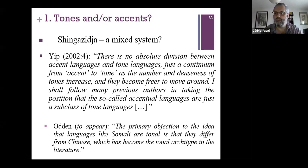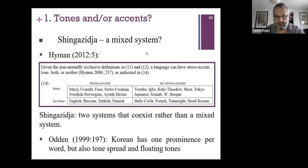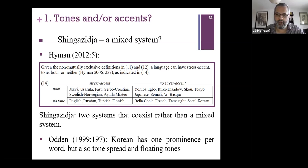Tone can also strengthen the rhotic consonant — another feature not typical of tonal languages. When the high tone is on the penultimate, the rhotic emerges as a vibrant. When the high tone is on the final vowel, the consonant is weaker — realized as a flap or even approximant. Shingazija is not mixing an accentual system with a tonal system; rather, it's a system that has properties of both tonal and accentual language types.